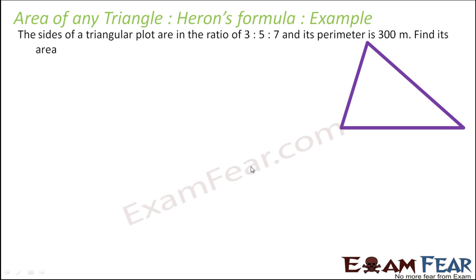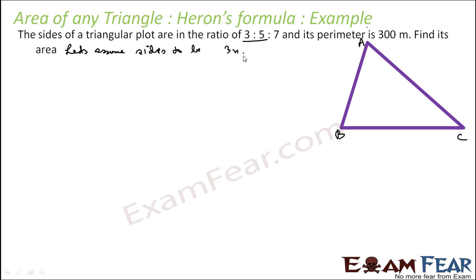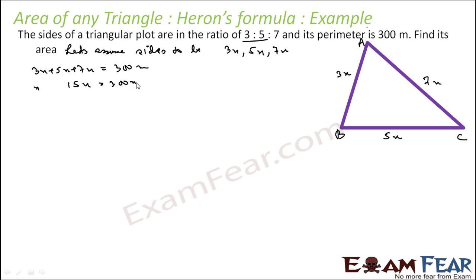Let's find the area of a triangular plot where the ratio of the sides is given and the perimeter is given. For Heron's formula, we need the actual side lengths. Since the ratio is given as 3:5:7, let's assume the sides to be 3x, 5x, and 7x — this maintains the ratio. The perimeter is 3x + 5x + 7x = 15x = 300 meters, so x = 20 meters.